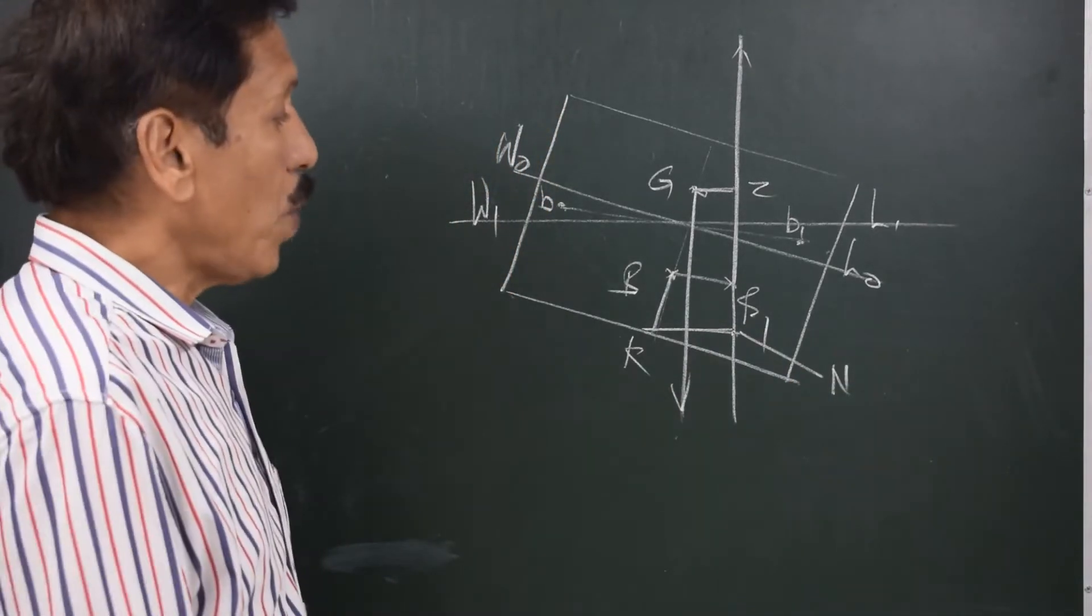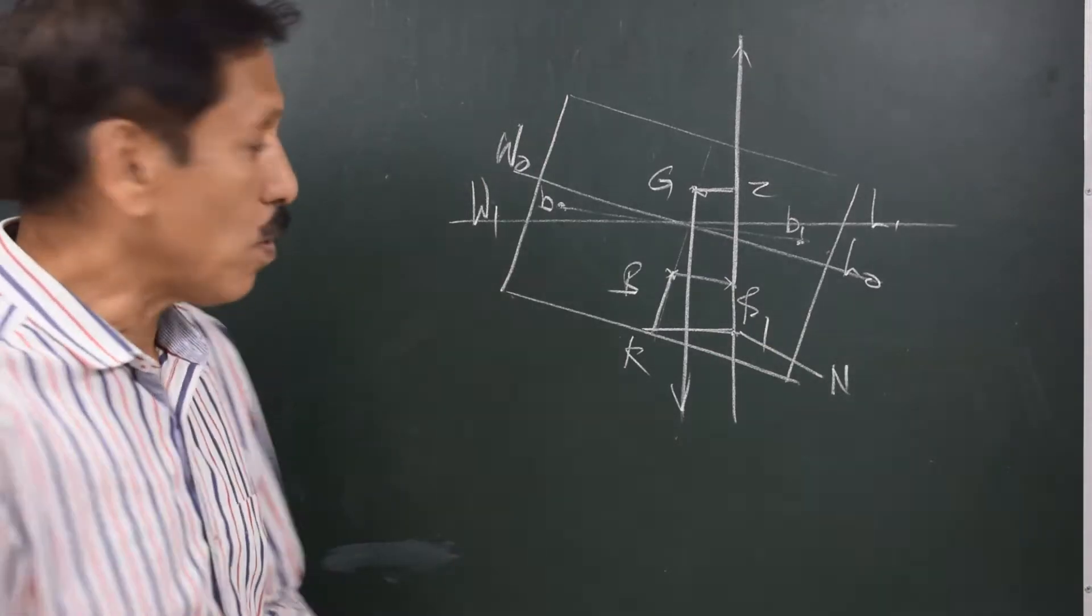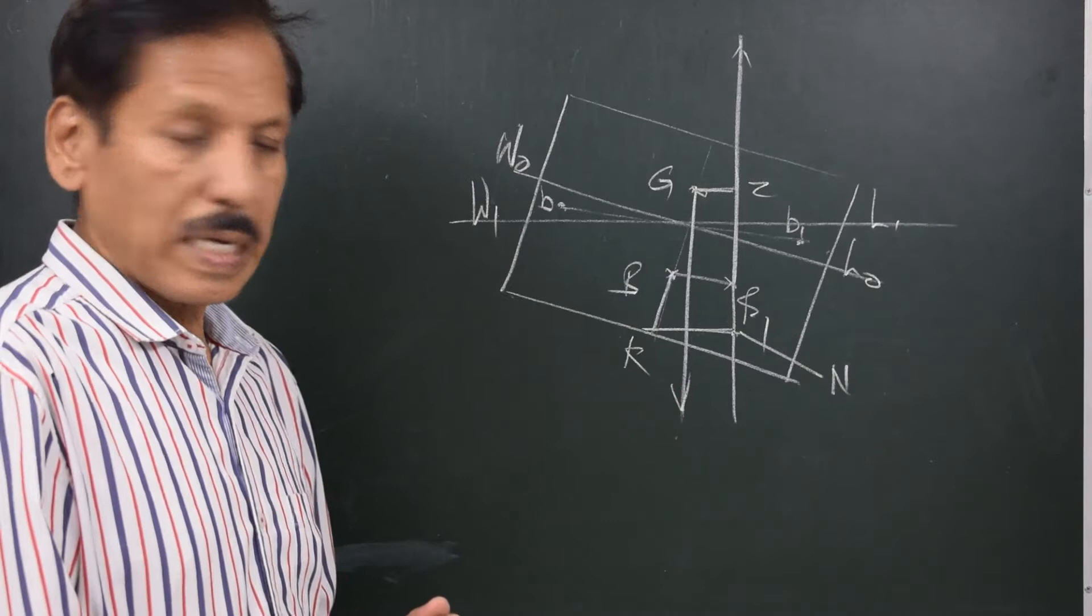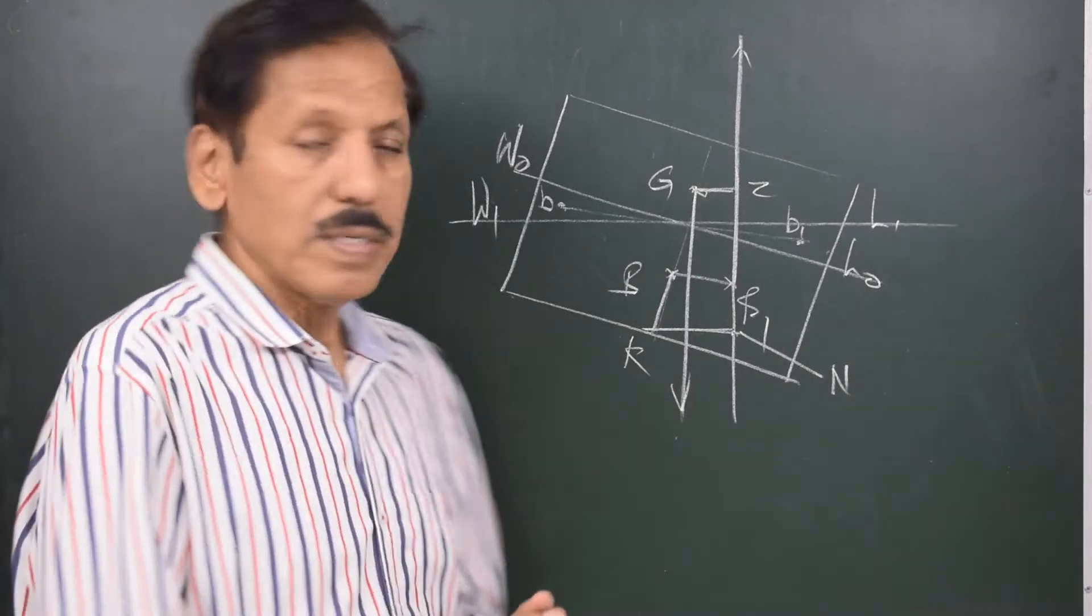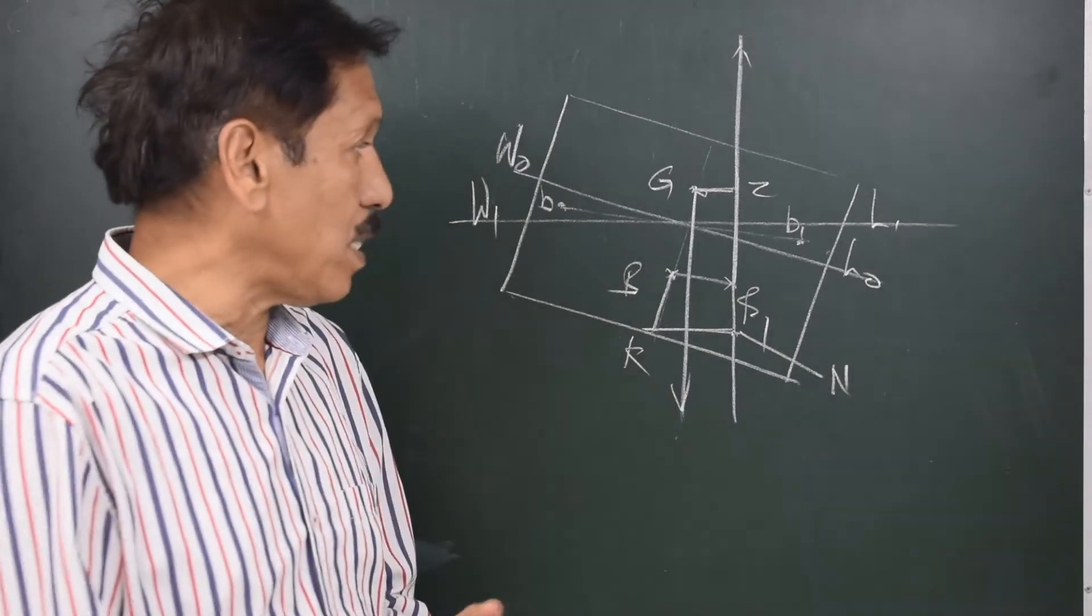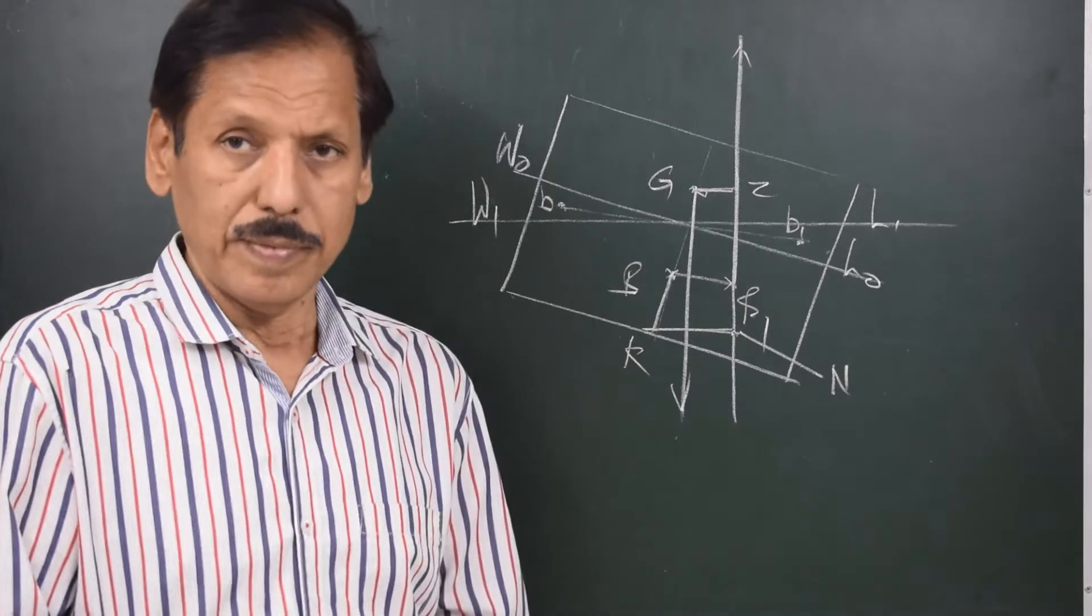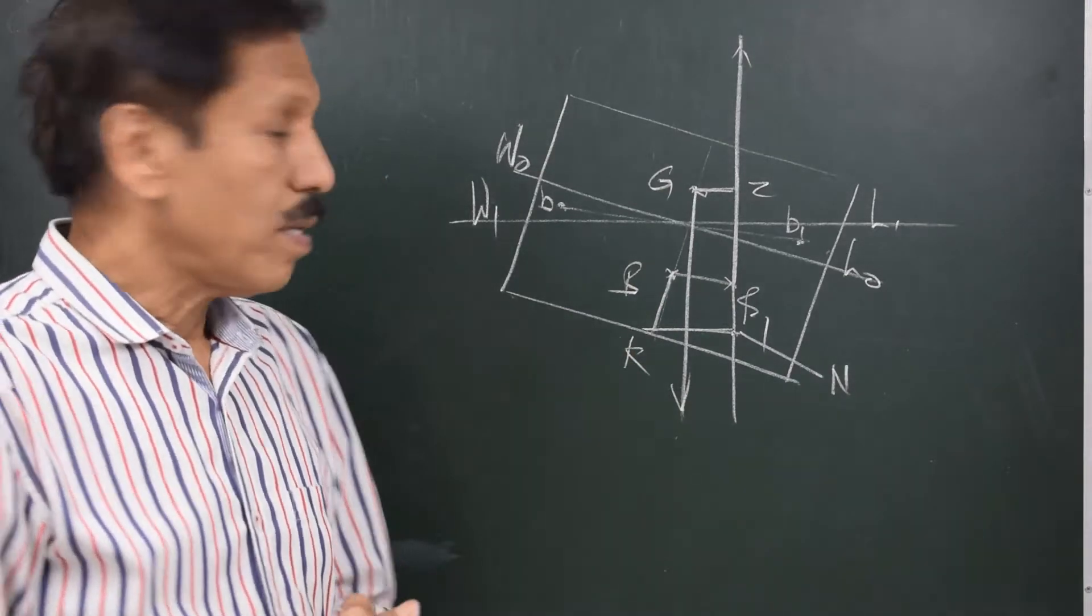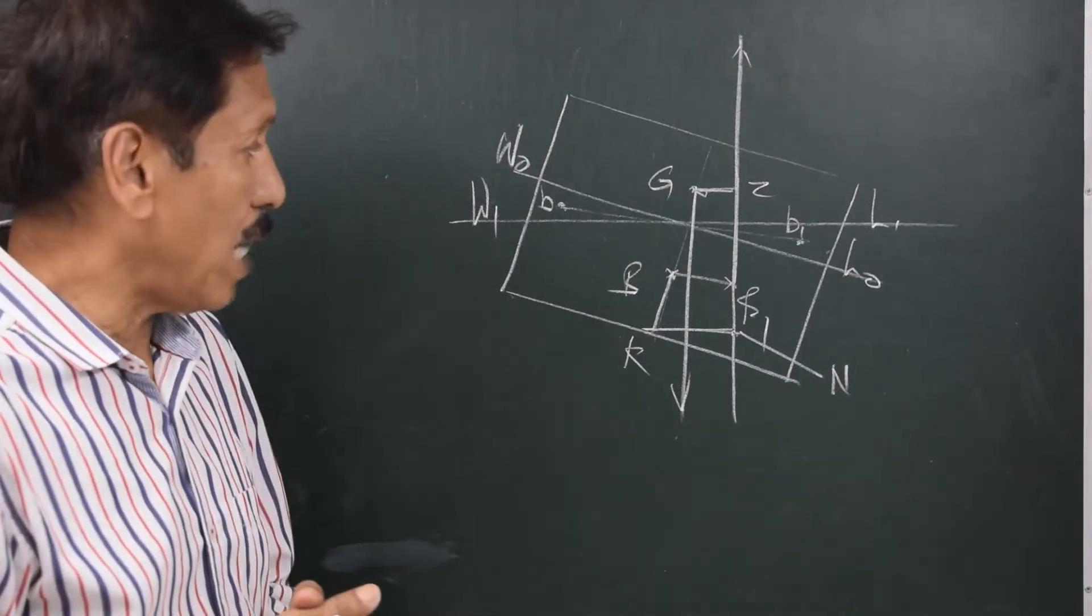What we are given in the stability book normally, the ship's stability books normally is the value of KN. KN is the lever. KN is the kind of righting lever for an imaginary position of G at Keel. If the G could be brought to Keel, then the righting lever would be KN. But G cannot be at Keel as you know.